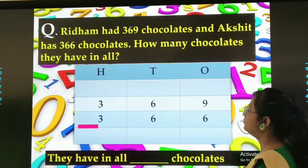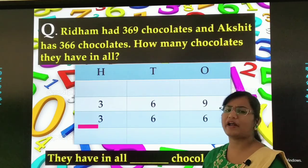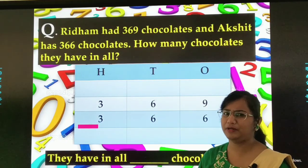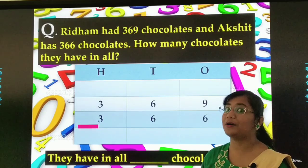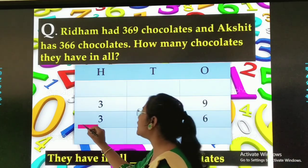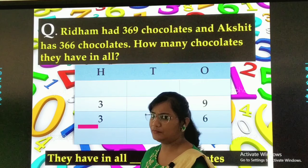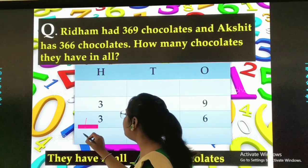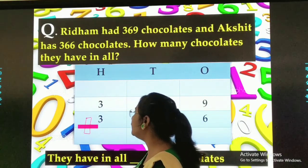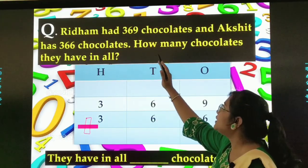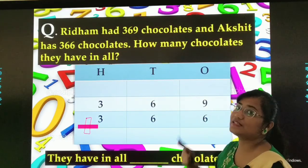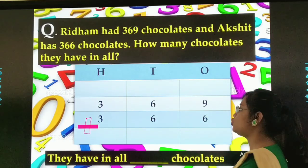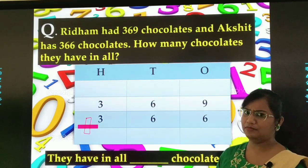Let us see. Yahaan pe subtraction karna hai? No, hame addition karna hai. So yahaan pe plus ka sign ayega. So 369 plus 366 chocolates. Shall we add? Let's go.